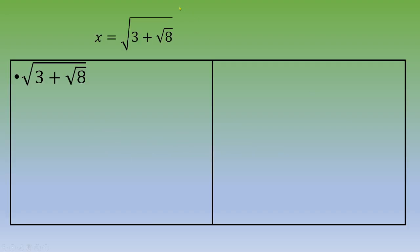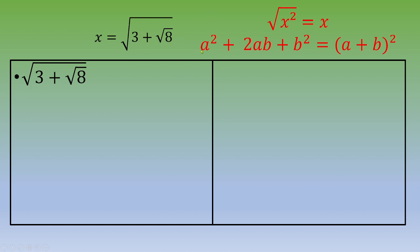The first step is to modify the square root. When you deal with a square root, it is always easier when the quantity below the root is a perfect square. Because we have a plus between the two terms, we will use the remarkable identity a squared plus 2ab plus b squared equals (a + b) squared. Let's take care of square root of 8 first: square root of 8 is square root of 2 times 2 squared, which equals 2 times 1 times square root of 2.